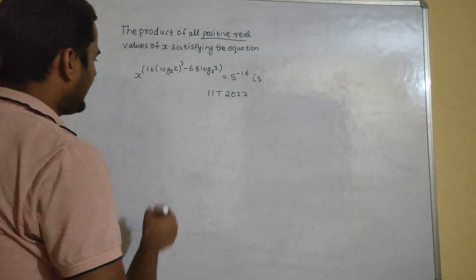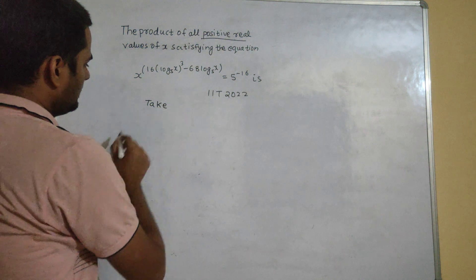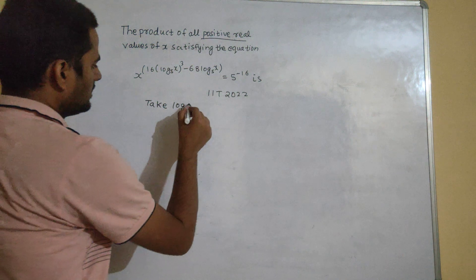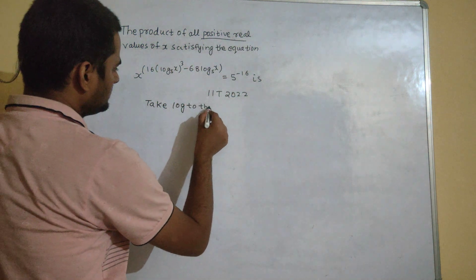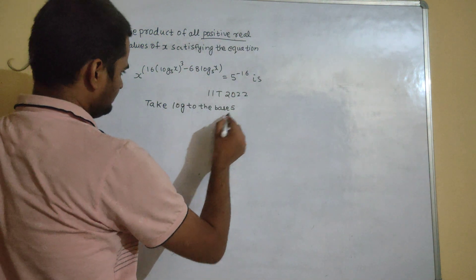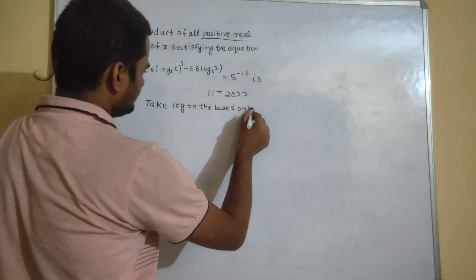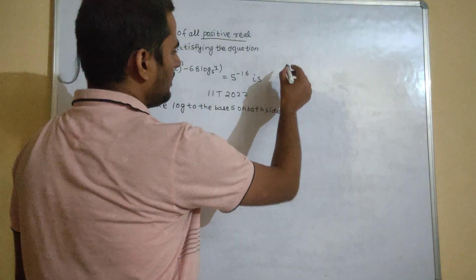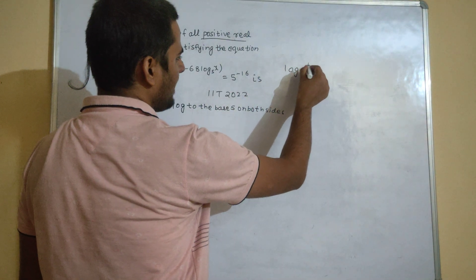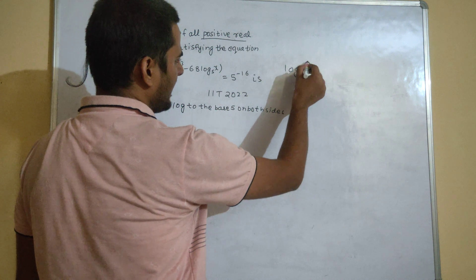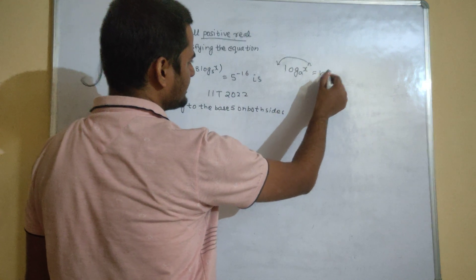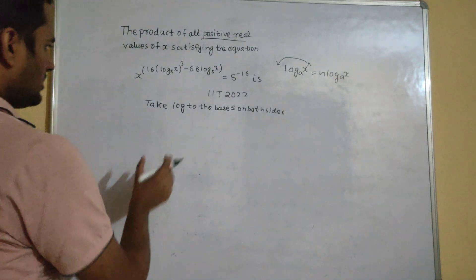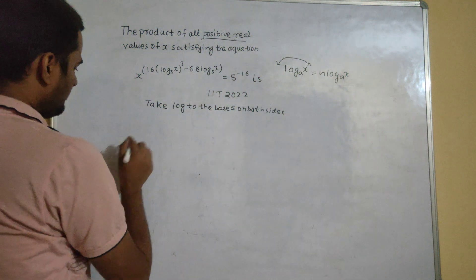So if I take log to the base 5 on both sides. You know the property of log, that log x power n to the base a, so n can jump and we can write this as n log x base a.